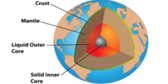During the Archean Eon (4.0 to 2.5 billion years ago), the Earth's crust underwent significant geological activity, including the formation of the first continents and the development of primitive life forms. Continental crust formation was likely driven by partial melting, volcanism, and crustal recycling. The Proterozoic Eon (2.5 billion to 541 million years ago) was characterized by continued growth and stabilization of continental crust, as well as the emergence of complex life forms and the assembly of supercontinents such as Rodinia and Pannotia.